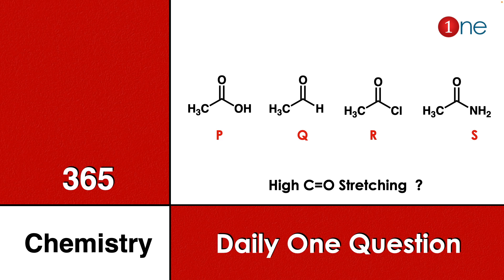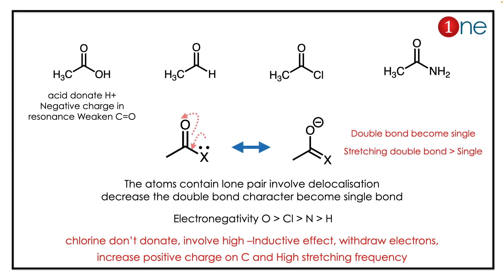The answer lies in the C=O bond strength. The C=O bond strength is dictated by many factors — mostly, the lone pair donating atom weakens the C=O by conjugation, as the double bond becomes a single bond. A single bond has low stretching frequency, because bond strength decreases. The donating ability differentiates the carbonyl stretching frequency.